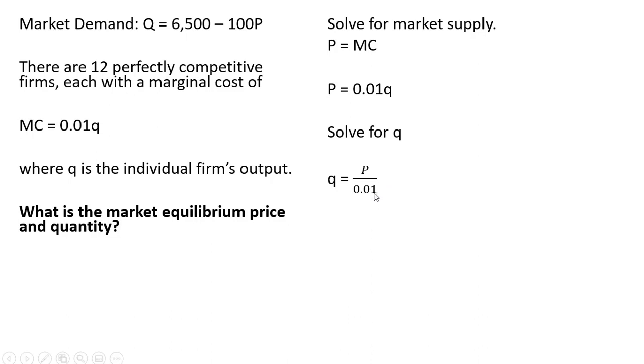And we get the following, and just simplifying a little bit, q equals 100 times P. One divided by 0.01 is 100. And this is the individual firm supply equation.